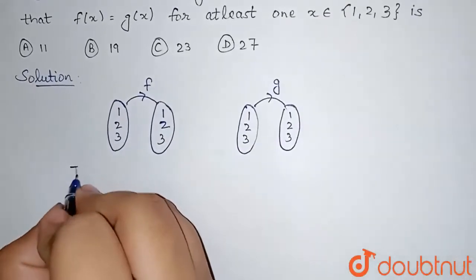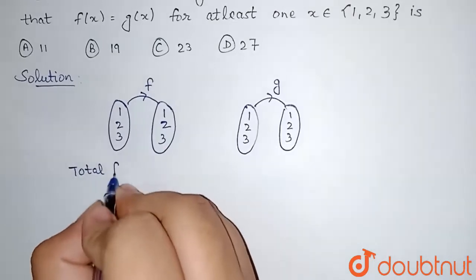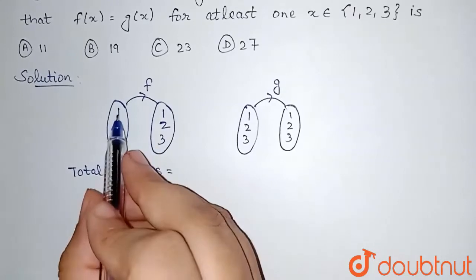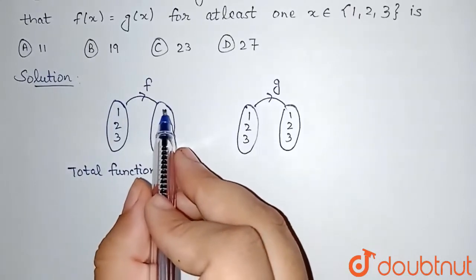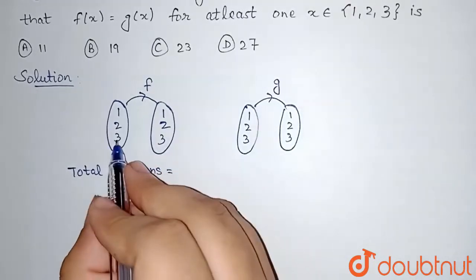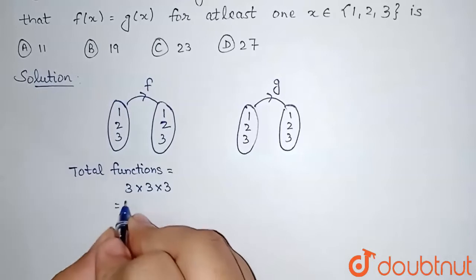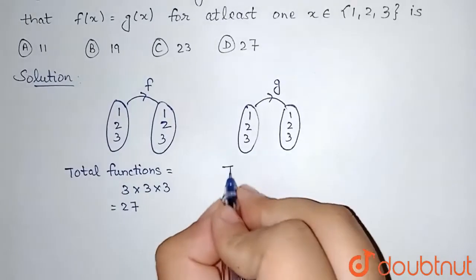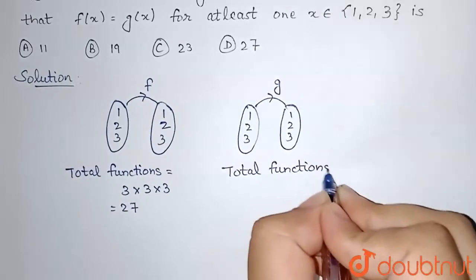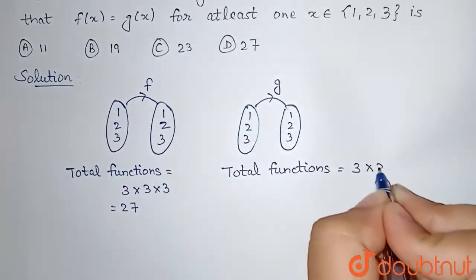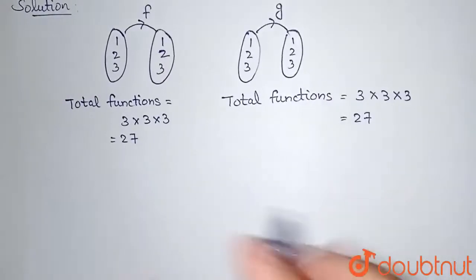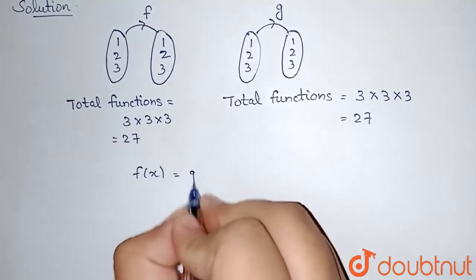For f, the total number of functions that can be formed: element 1 has 3 choices, element 2 has 3 choices, and element 3 has 3 choices — giving 27 total functions. Similarly for g, the total number of functions is also 3×3×3 = 27.